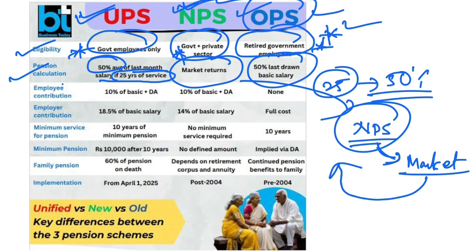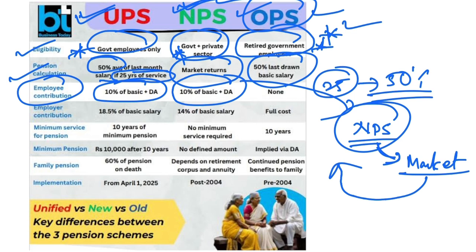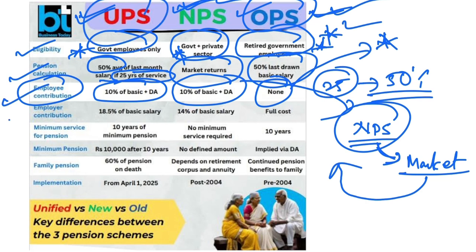UPS and OPS are similar in that respect. The employee contribution in UPS is 10% of basic plus DA. And in the National Pension Scheme, the employee contribution is also 10% of basic plus DA, while the employer contribution is equal to 14% of basic pay.